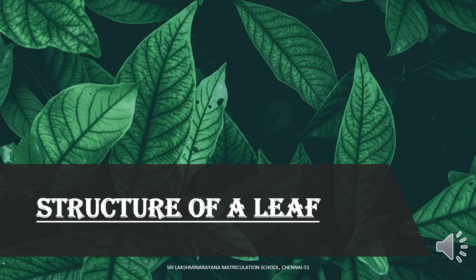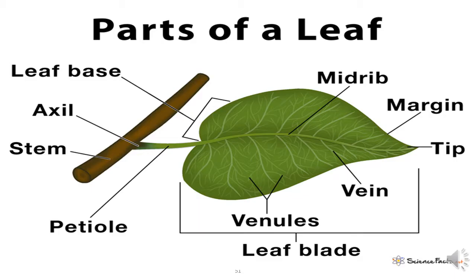Now let us learn about the structure of a leaf and look at its parts. Tell me, children — why is a leaf green in colour? It could be red, blue, purple, or violet, so why is it green? Because there is a pigment in the leaf called chlorophyll, and the colour of that pigment is green. So because of this green pigment, the leaf is green in colour.